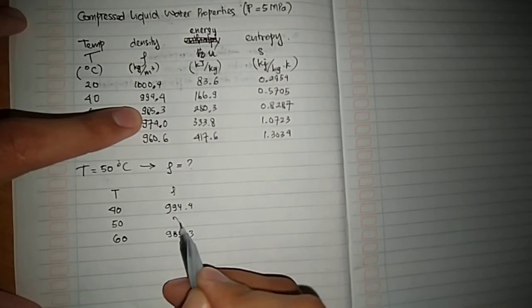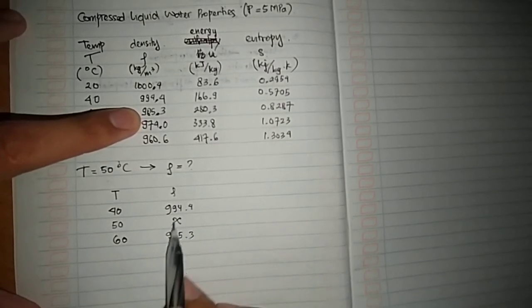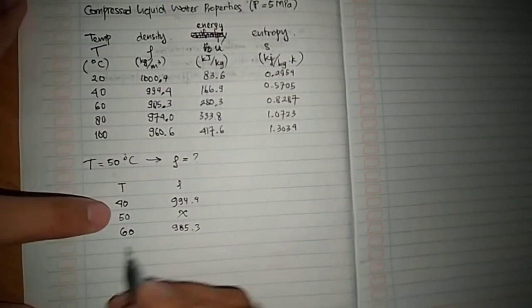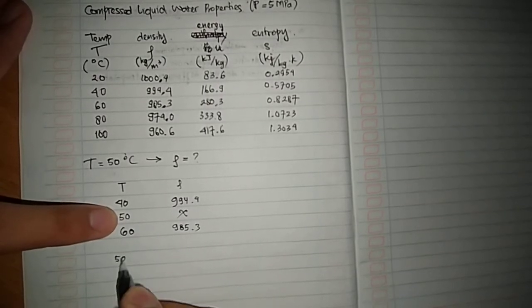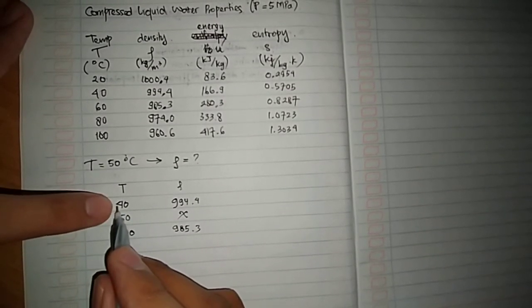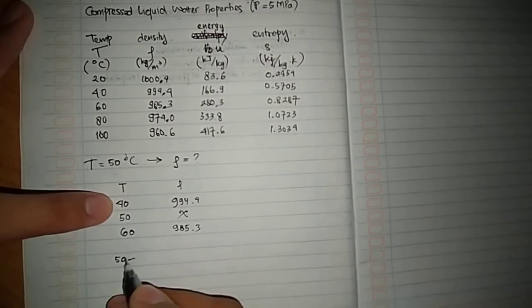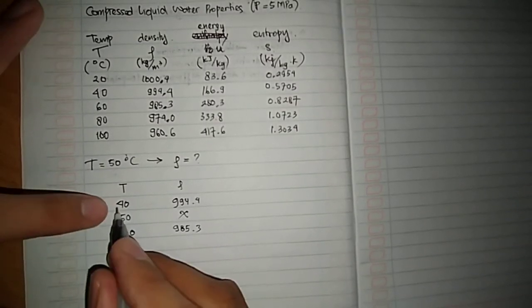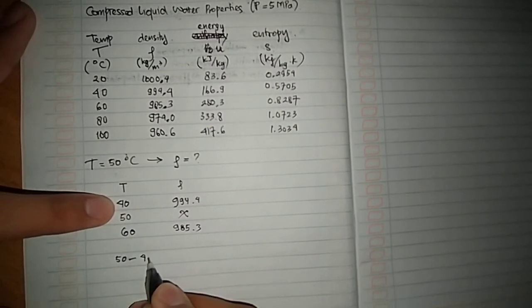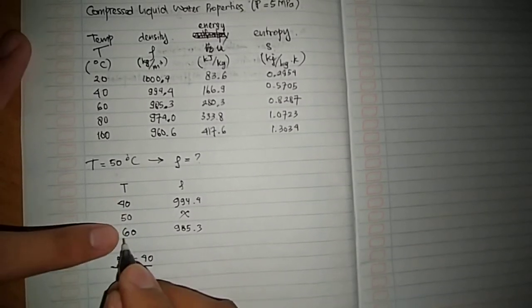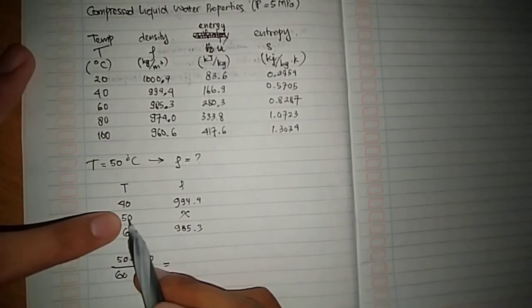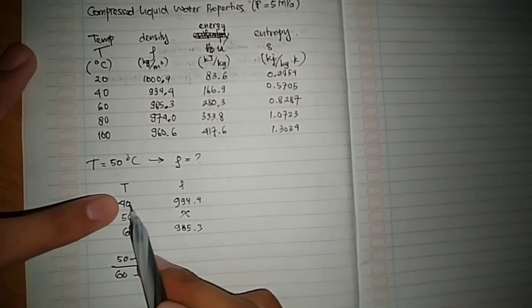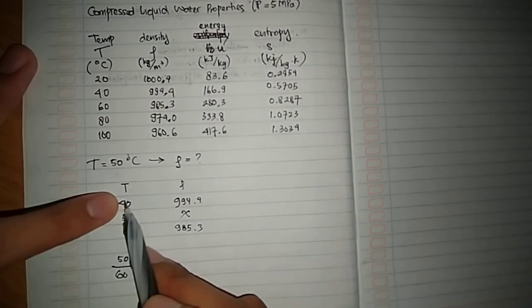Now we are going to find this value. The formula is: middle minus first, divided by last minus first, equals middle minus top, divided by bottom minus top. 50 minus 40, this minus this, divided by this minus this. And then third minus first.